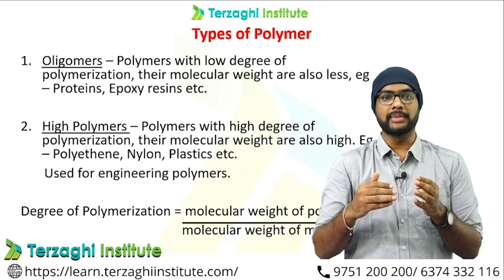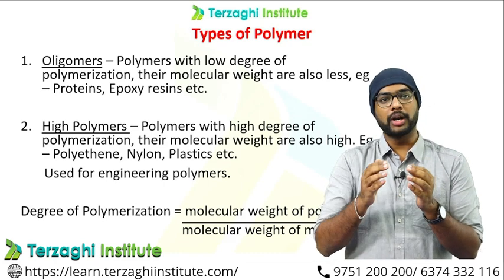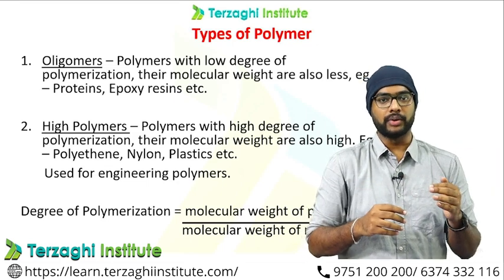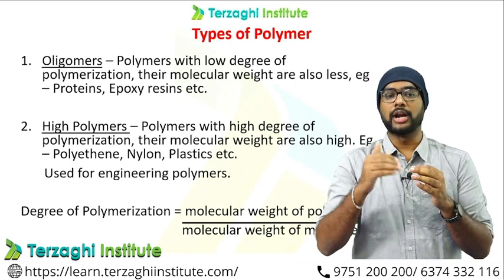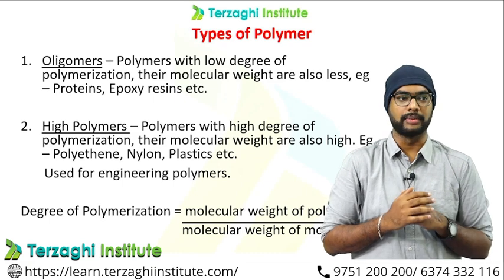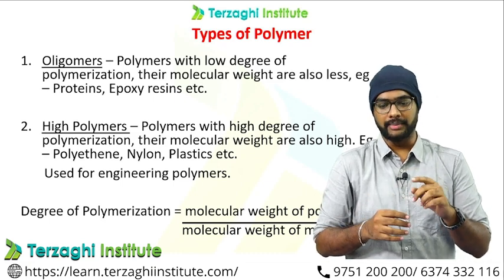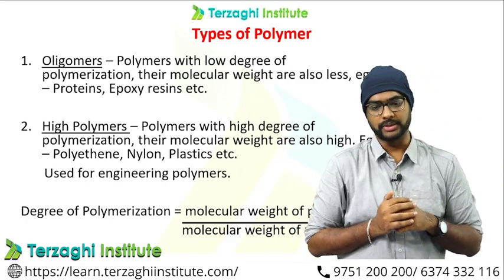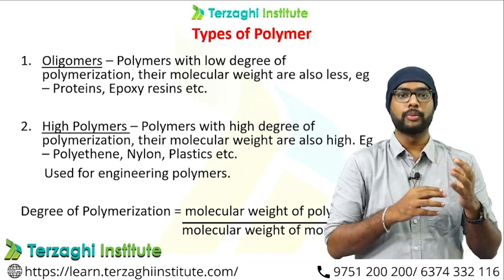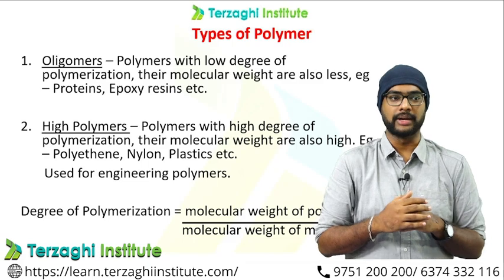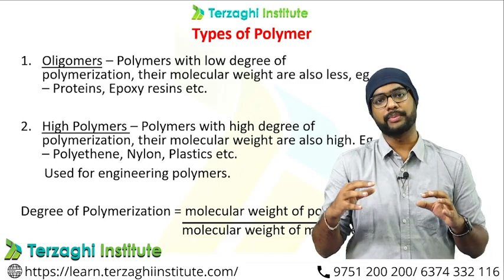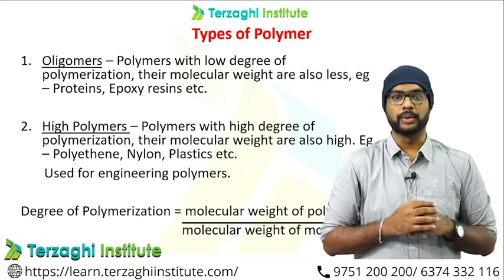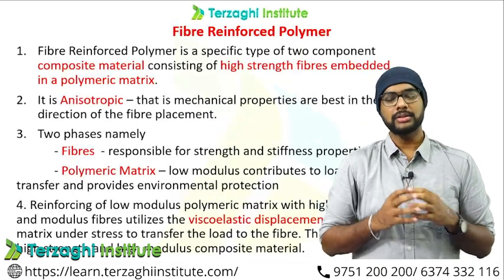The molecular weight of a polymer equals the molecular weight of the monomer multiplied by the degree of polymerization. High polymers are used for general engineering purposes. Low polymers — oligomers — are not used. We go for high polymers for engineering purposes. Check out respective examples. Fiber Reinforced Polymer.